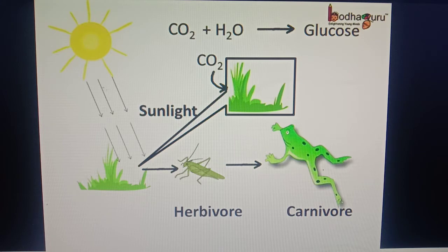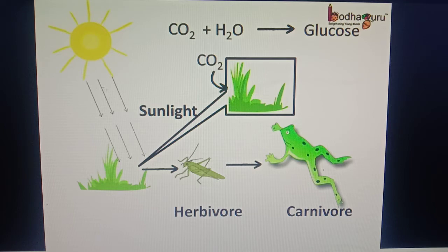The herbivores are the plant-eating animals, so they eat the plants directly. The carnivores generally eat the herbivores, which are dependent on the plants for their food. So we can say that other animals are dependent on plants indirectly for their food.